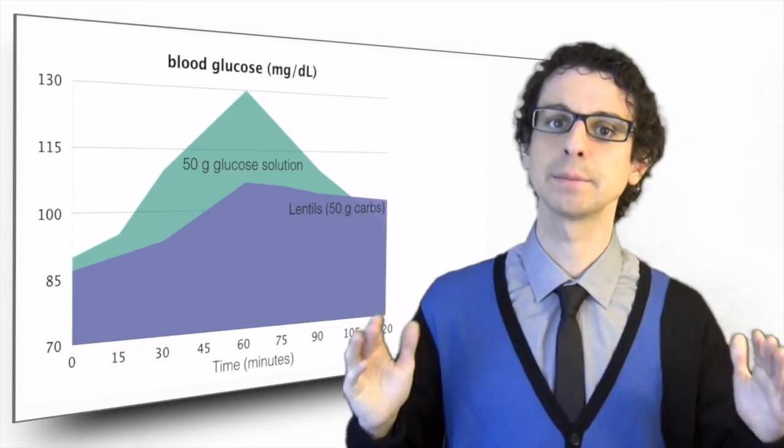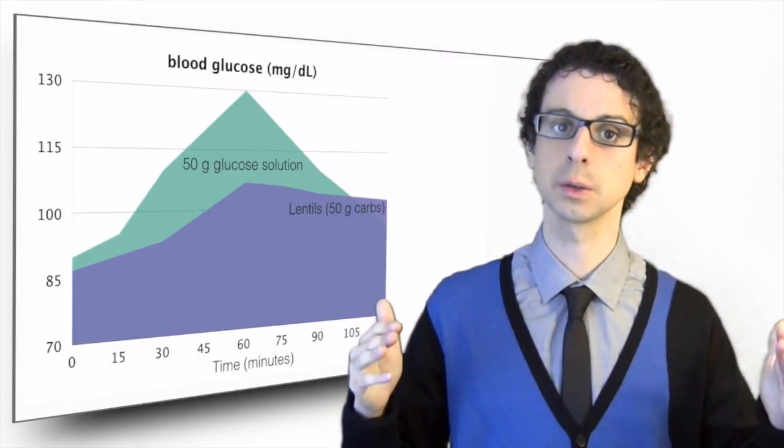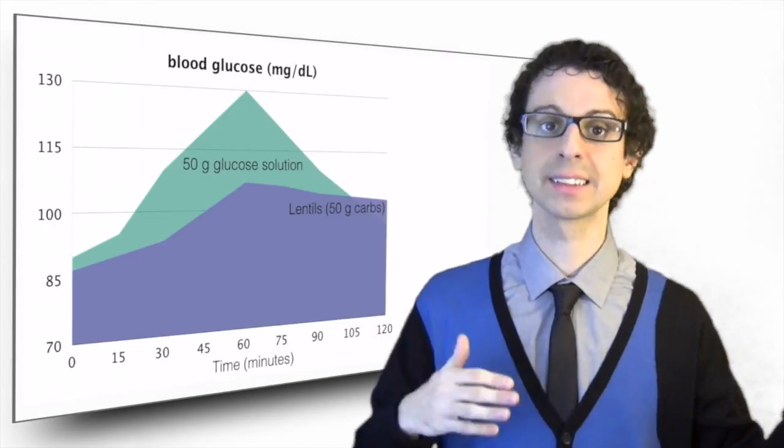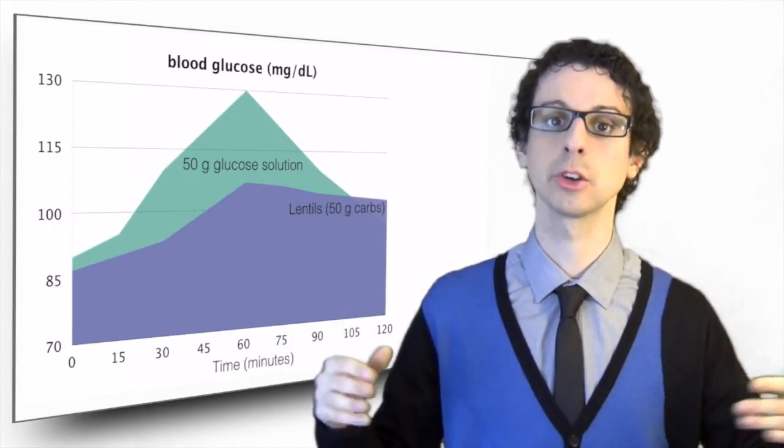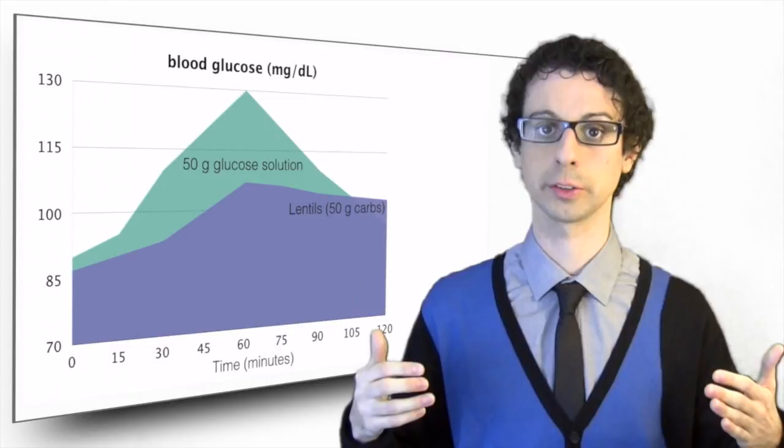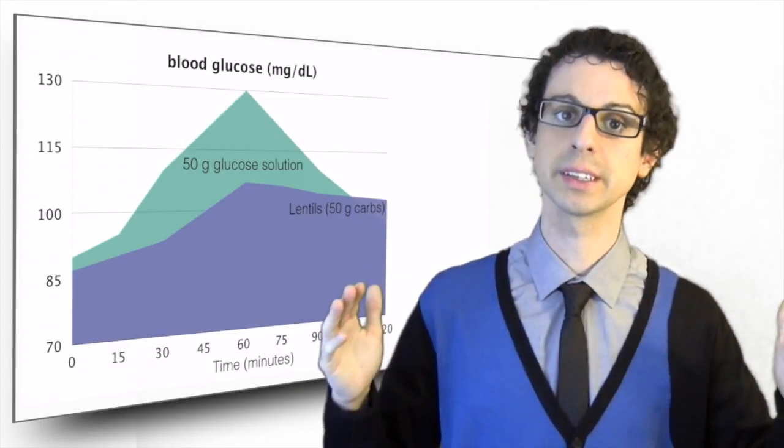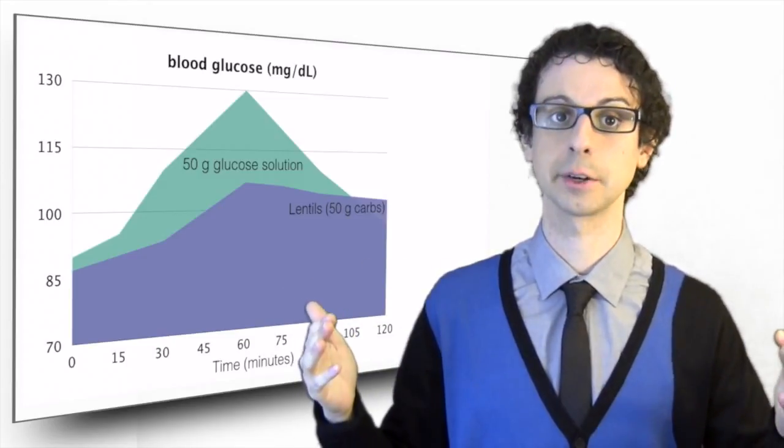To complicate things, some labs have chosen not to use glucose in water as a standard, but white bread. This has advantages and disadvantages, whose discussion goes beyond the scope of our course. Just keep in mind that you cannot compare GI numbers from different tables if they are calculated using different standards.